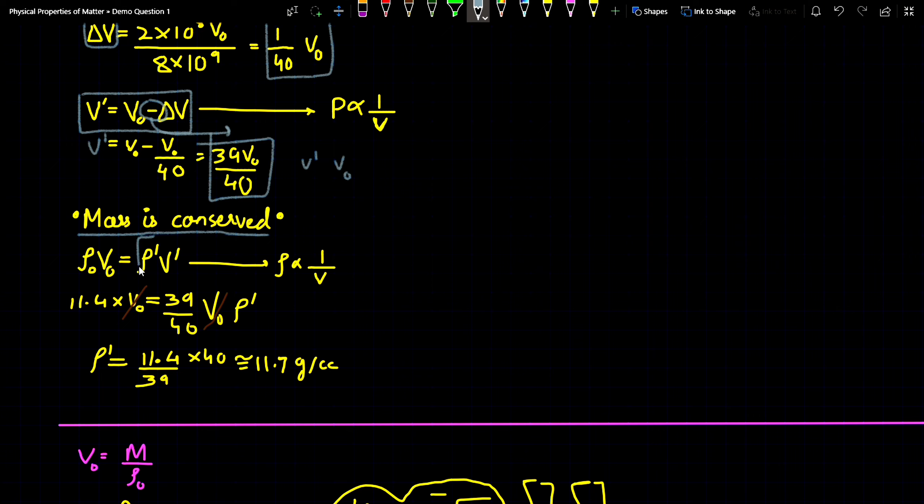So we would conserve the mass over here and find the value. Now here ρ' I have written. ρ' is the final density which we have to find. You know one thing that mass upon volume is your density.